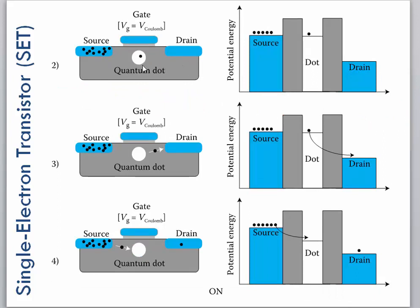So we have a quantum dot. That's our electron that's in the quantum dot here. So now this potential energy is raised again because the electron is in the dot.